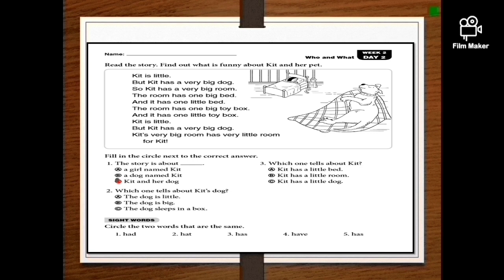Which one tells about Kit's dog? The dog is little, the dog is big, the dog sleeps in a box. So the dog is big.